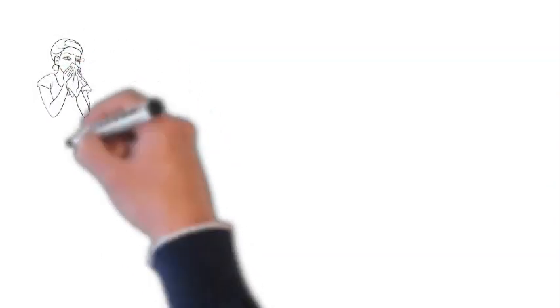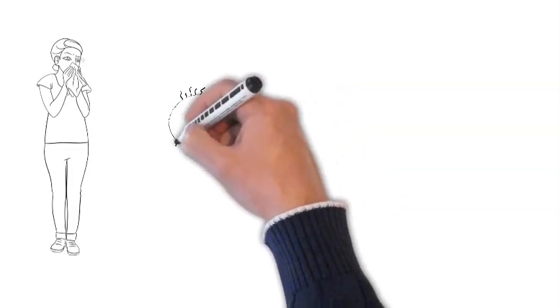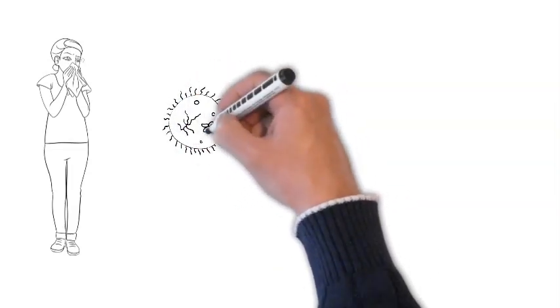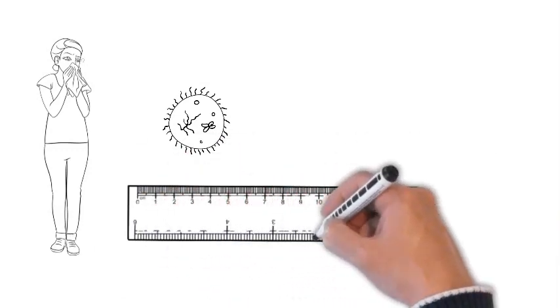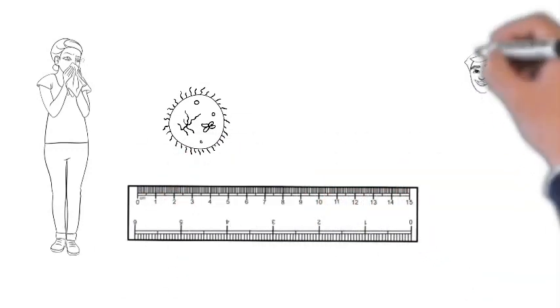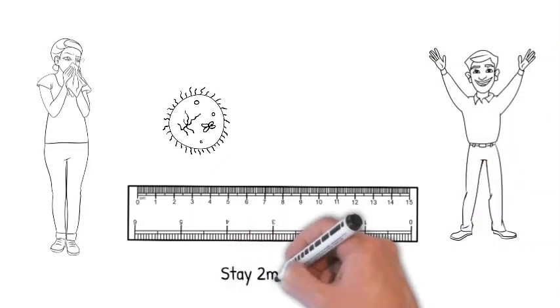Here's someone who has a bit of a cough. She doesn't think she's got Covid but she might have. Here's the virus that she's coughing out. We know the viruses are in droplets and they travel about two meters, so as long as she stays more than two meters away from anyone else then they're happy.